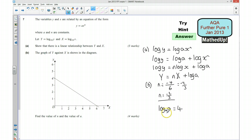Now, I know that A is going to have to be equal to 10 to the power of 4, which means A is going to be equal to 10,000. And there you go, so N is equal to negative 2 thirds, and A is equal to 10,000.